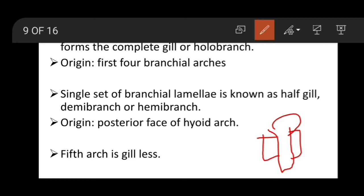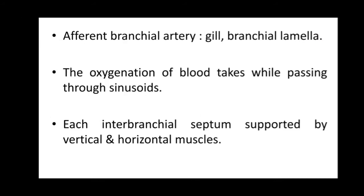A complete or holobranch originates from the first four branchial arches. A single set of branchial lamellae — known as a half-gill, demibranch, or hemibranch — is present when only one set exists. When both sets are present, it is a holobranch, originating from the posterior face of the first four arches. The fifth or sixth arch is gill-less. The afferent branchial artery ducts into the gills and branchial lamellae where oxygenation of blood takes place in the sinuses.